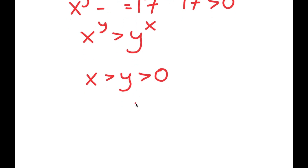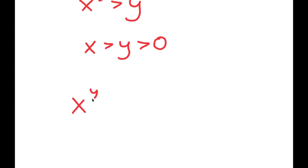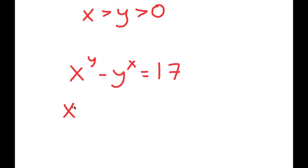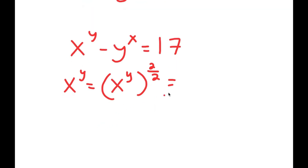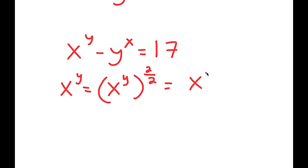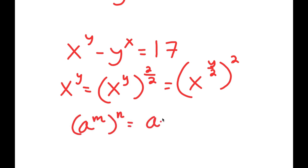Now that we know this, I'm going to rewrite my equation: x to the power of y minus y to the power of x is equal to 17. And x to the power of y, I can rewrite as x to the power of y to the power of 2 over 2, because 2 over 2 is the same thing as 1. This I can rewrite as x to the power of y over 2 to the power of 2, because if I have something in the form a to the power of m to the power of n, this is the same thing as a to the power of m times n.